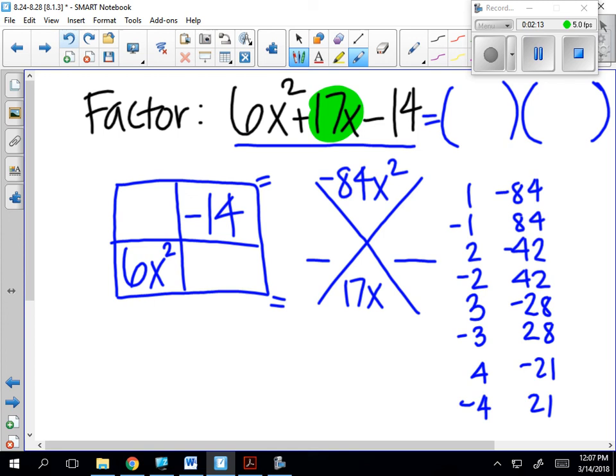Looking at that list, I see a pair of numbers that adds to be positive 17. It's the last one. So I know that my two factors are negative 4x and positive 21x, because they multiply to equal the product of my diagonal and they add to be the middle term 17x.